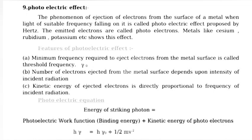Photoelectric effect: The phenomenon of ejection of electrons from the surface of a metal when light of suitable frequency falls on it is called photoelectric effect, proposed by Hertz. The emitted electrons are called photoelectrons. Metals like cesium, rhodium etc. show this effect.